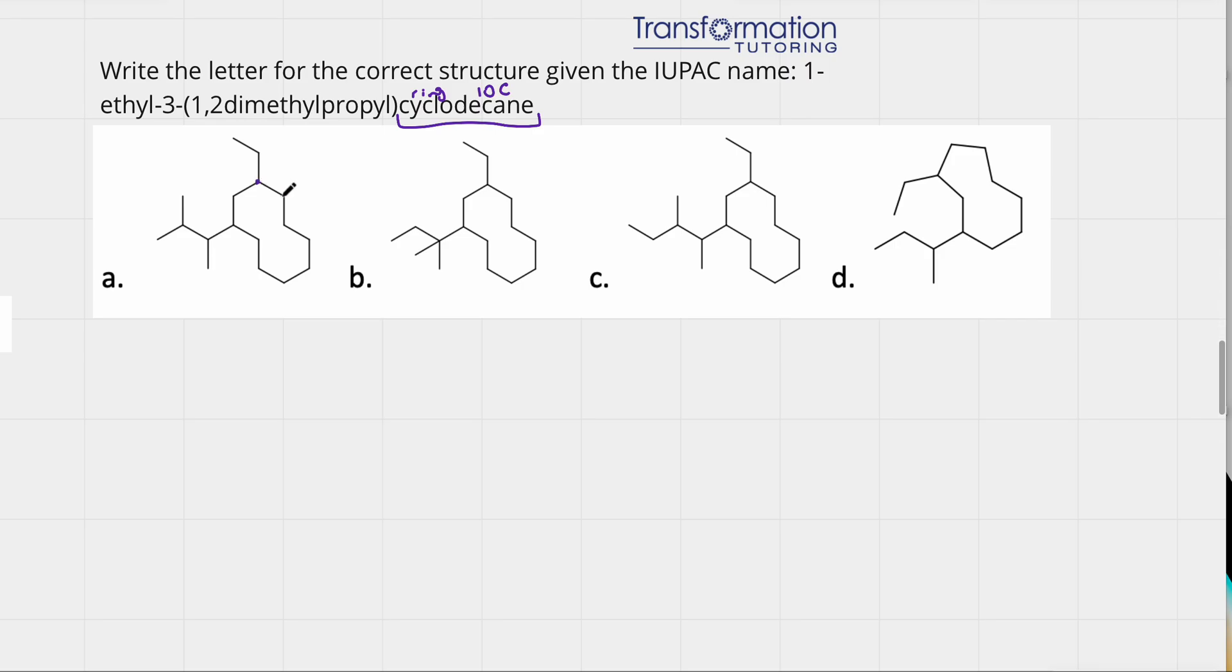So if I go here, 1, 2, 3, 4, 5, 6, 7, 8, 9, 10. This ring consists of 10 carbons.